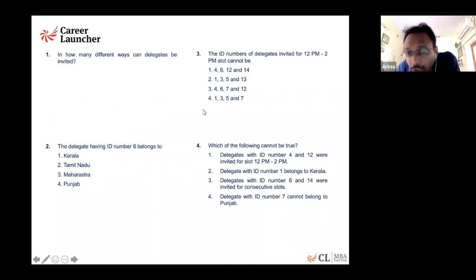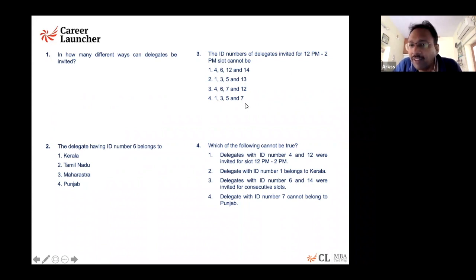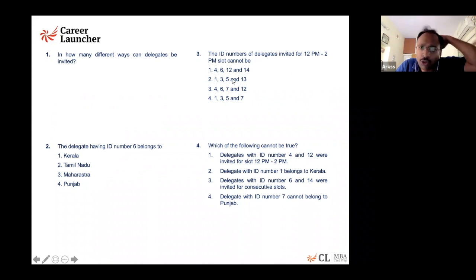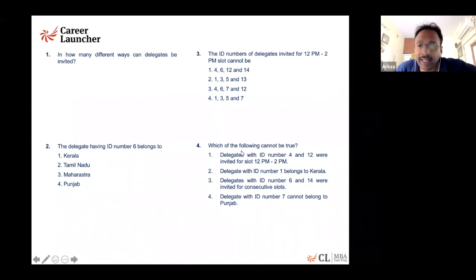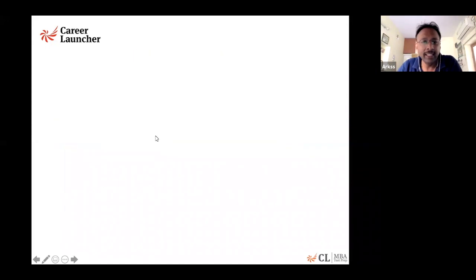This is a huge clue. The answer choices list groups like 4, 6, 12, 14 and 1, 3, 5, 13 and 4, 6, 7, 12 and 1, 3, 5, 7. If you look at these choices, you can get the answer very easily. The last question asks which of the following cannot be true — we'll figure that out. I want to solve this very easily.